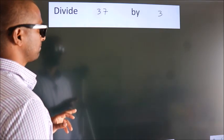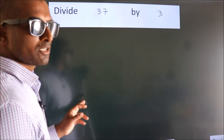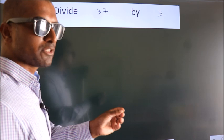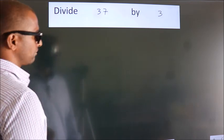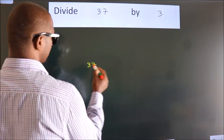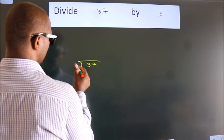Divide 37 by 3. To do this division, we should frame it in this way. 37 here, 3 here.